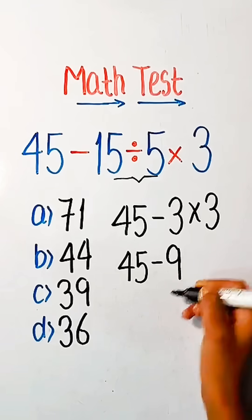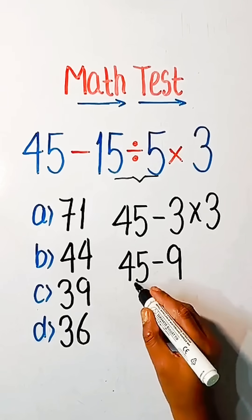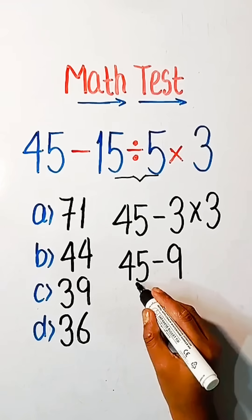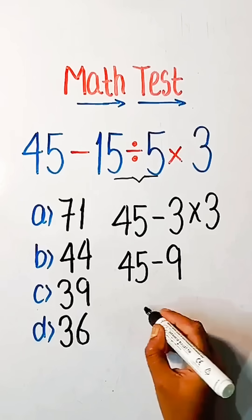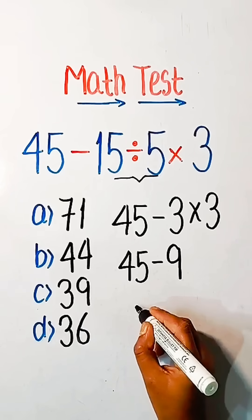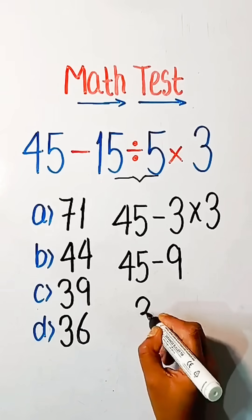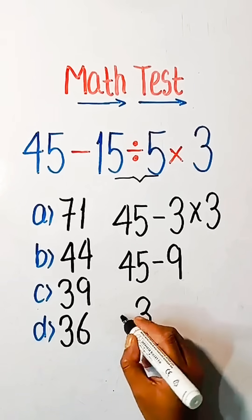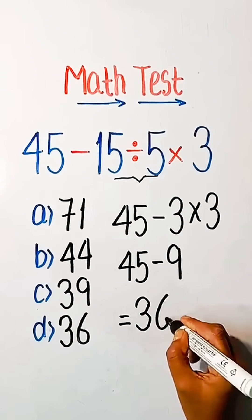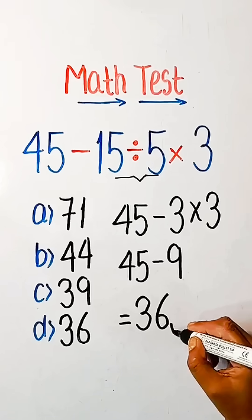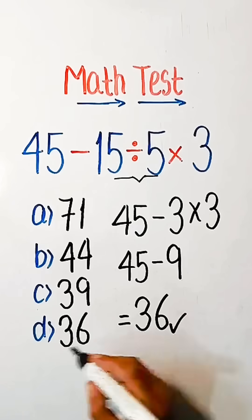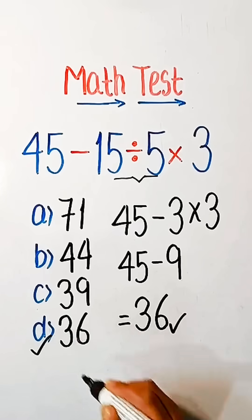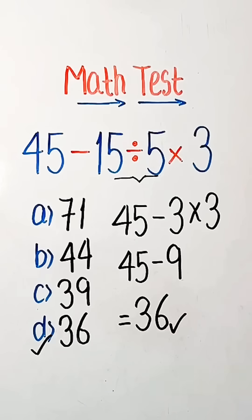And 45 minus 9 is equal to 36. So 36 is our correct answer — option D is the correct one.